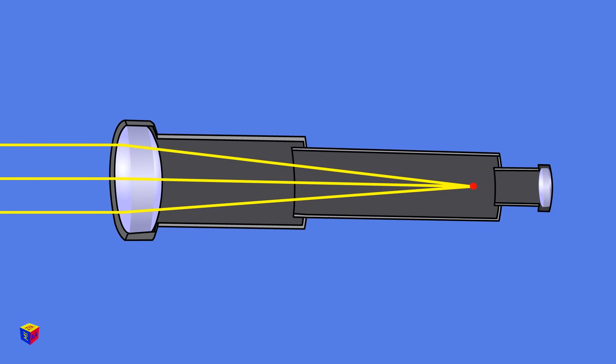After passing through the focal point, the rays diverge again. Here we need a second lens in the eyepiece, so that the rays of light again become parallel, and that parallel beam of light goes into the viewer's eye.